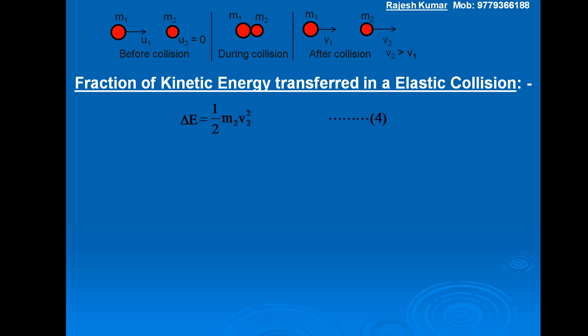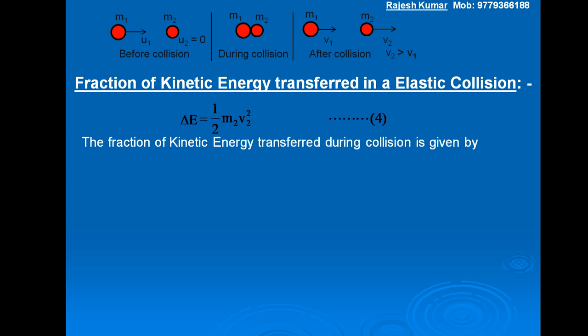Let ΔE = ½ M2 V2² be equation 4. The fraction of kinetic energy transferred during collision is given by F = ratio of kinetic energy transferred in the collision to the kinetic energy of the striking object before collision. Therefore, F = ΔE / E1.